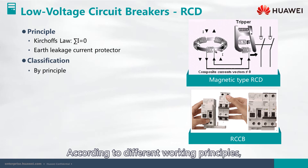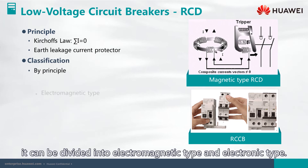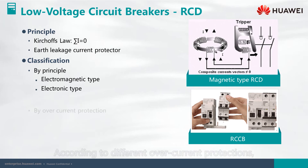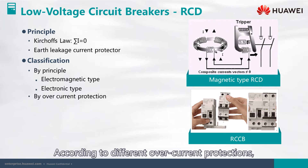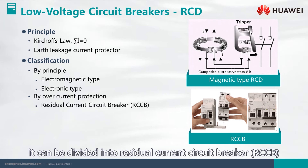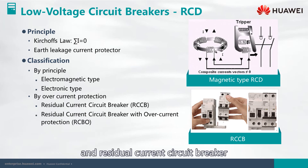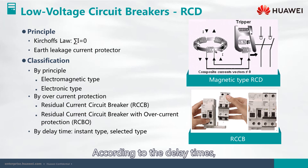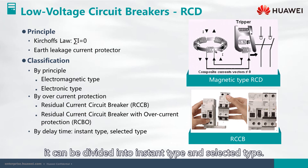According to different working principles, RCDs can be divided into electromagnetic type and electronic type. According to different overcurrent protections, they can be divided into Residual Current Circuit Breaker, RCCB, and Residual Current Circuit Breaker with Overcurrent Protection, RCBO. According to delay times, they can be divided into instant type and selected type.